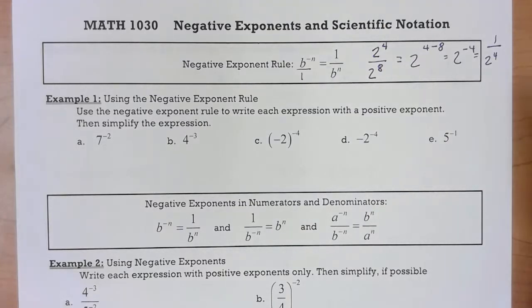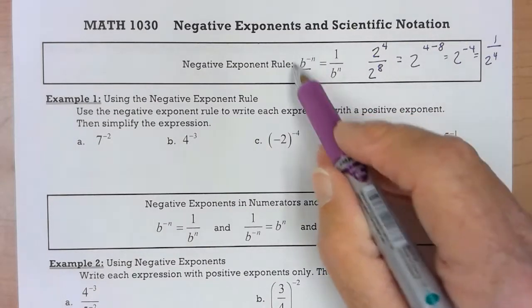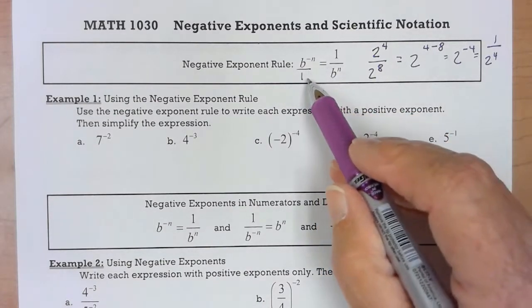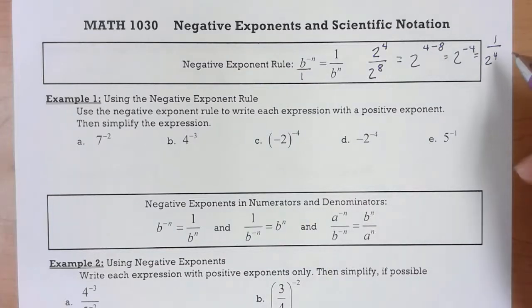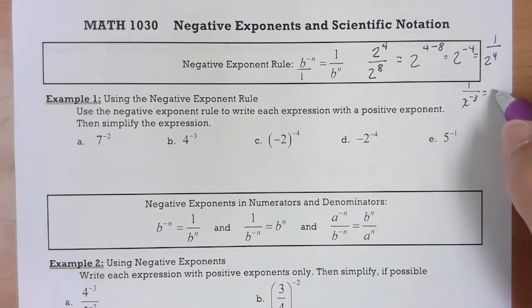Anytime you have a negative exponent you need to take it, if it's in the numerator, take it to the denominator, and you are going to see problems where if it's in the denominator, get the reciprocal, take it to the numerator, and when you do it becomes positive.